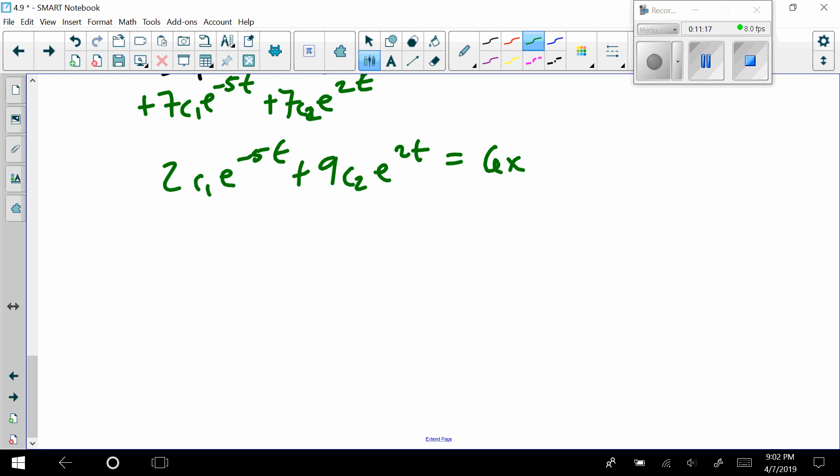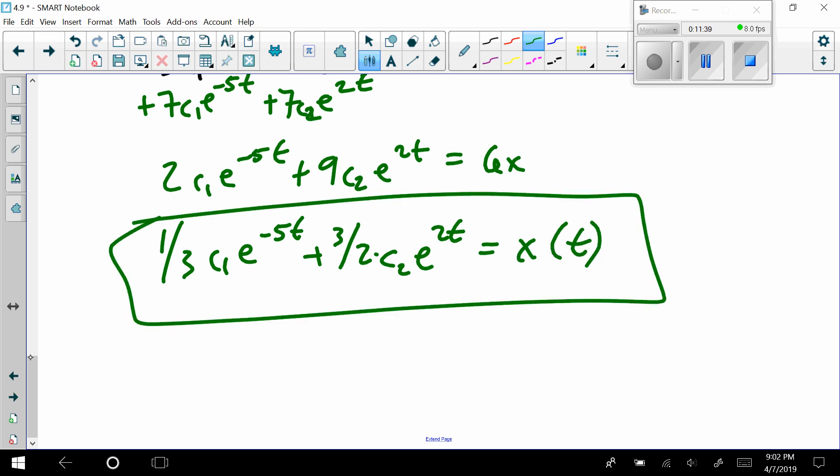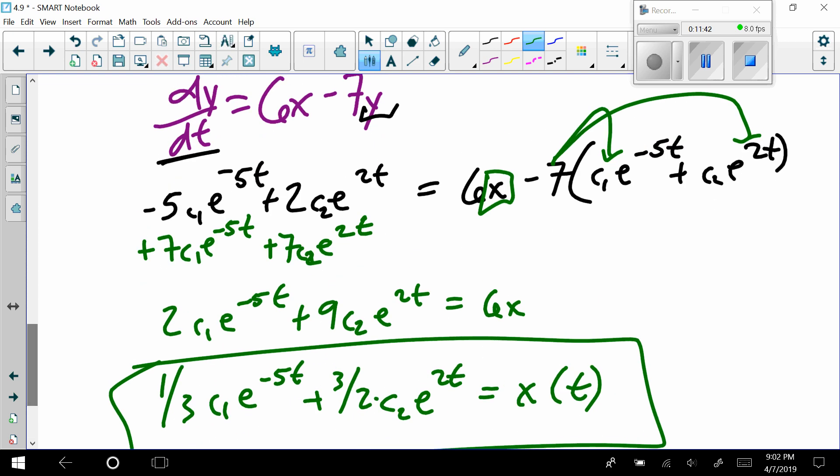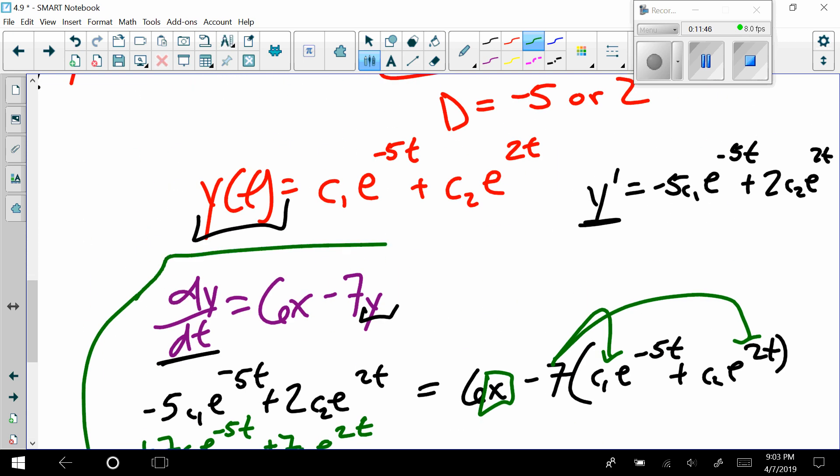Last thing to do would be to divide. As I divide, that becomes 1/3 c sub 1 e to the negative 5t plus 3/2 c sub 2 e to the 2t. That equals x(t). Now, I have my equation over here and my equation up here. And there's our very first one.